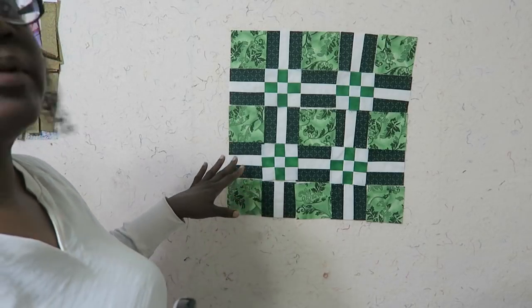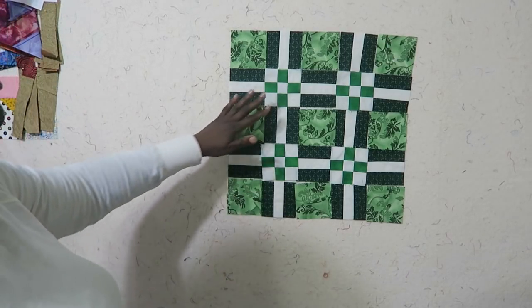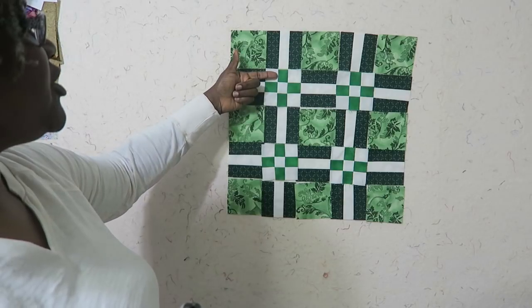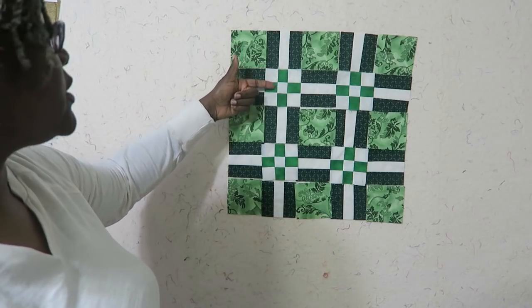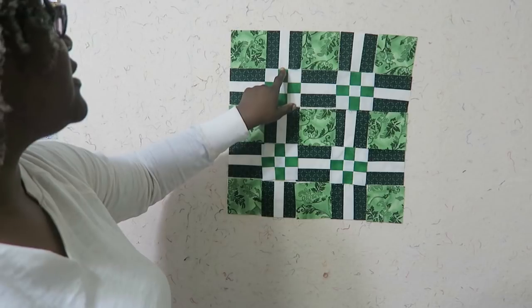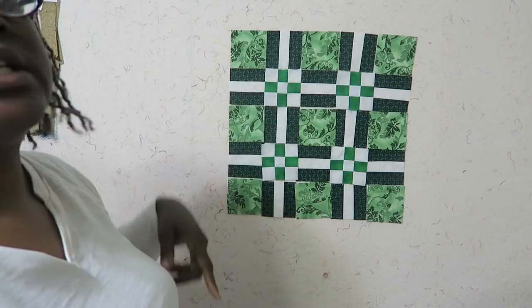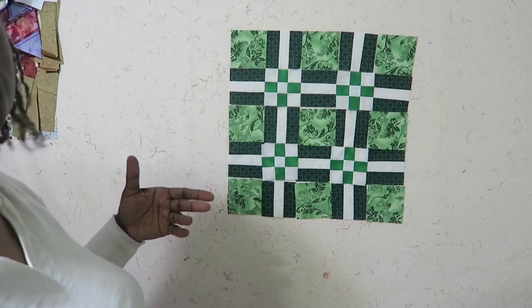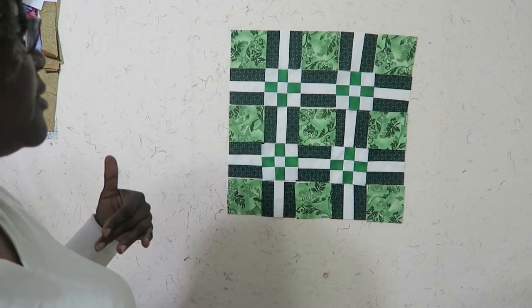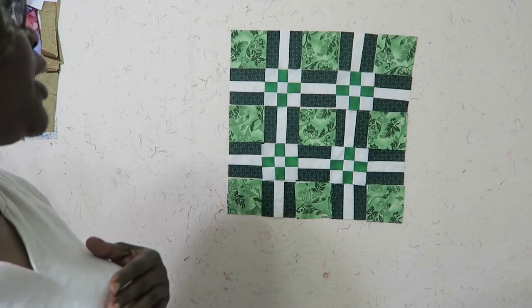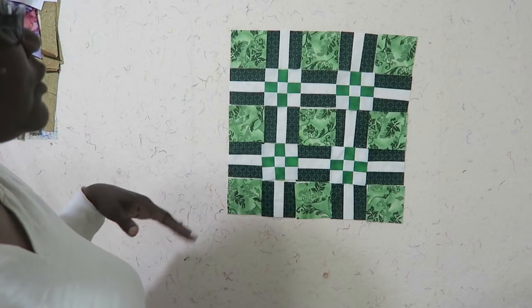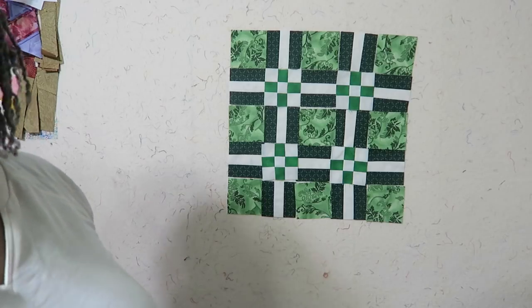I have all of my block pieces ready to sew together. When I made my nine patches I pressed my seams toward the center so that when these nest they are all going to nest perfectly and I don't have to worry about having seams that are going the same direction. So I will sew this block together and then we'll do a final wrap up.